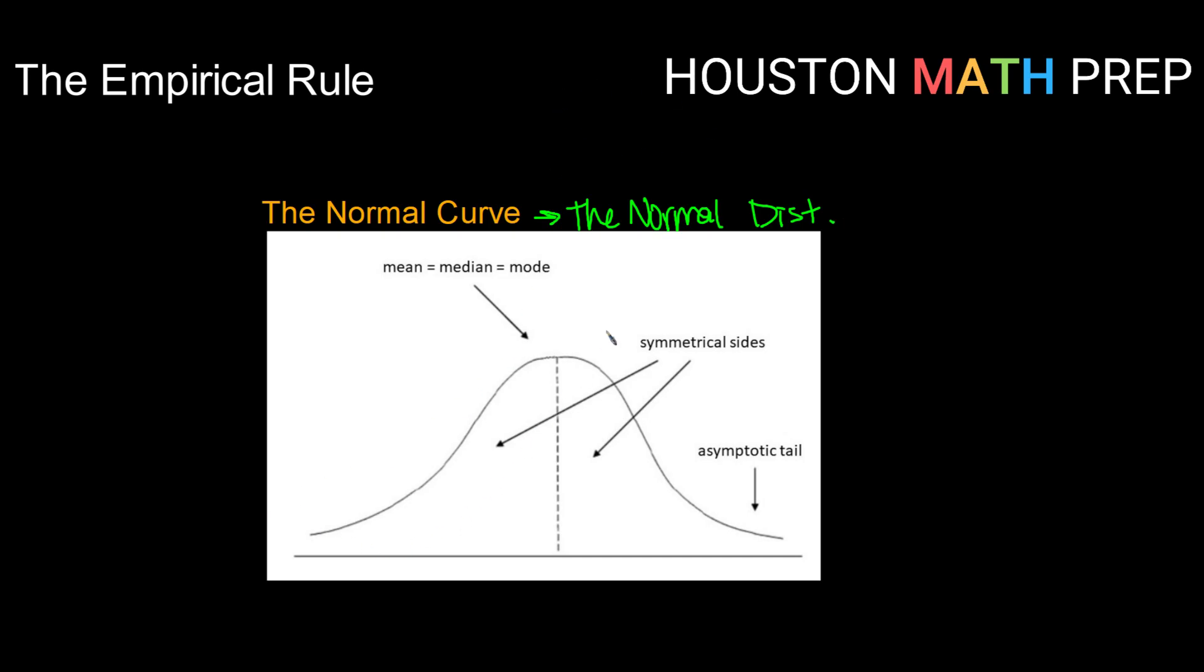Alright, so the normal curve looks like this. You've probably seen this somewhere in your life before, this is often called the bell curve. It's actually the normal curve. It is a symmetrical mound shape distribution.